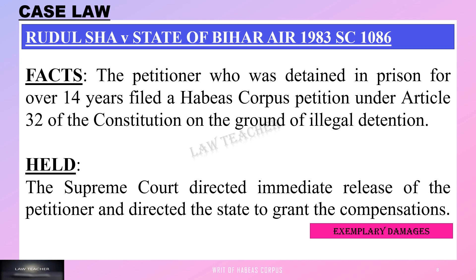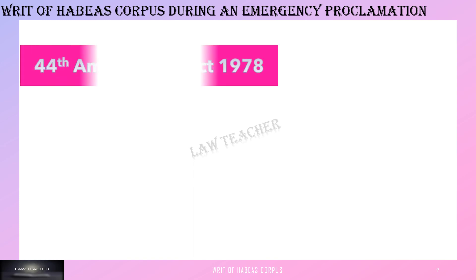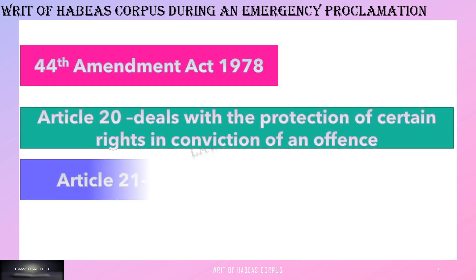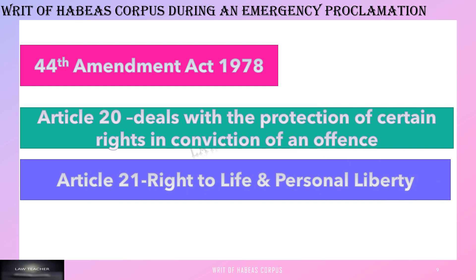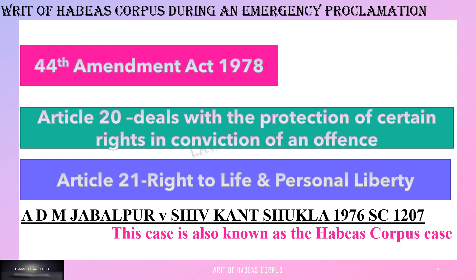The writ of habeas corpus is maintainable during an emergency proclamation. As after the 44th Amendment in 1978, it was stated that fundamental rights protected under Article 20 and 21 cannot be suspended, and for the enforcement of these rights, the writ petition can be filed in courts.